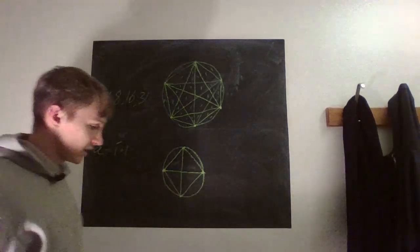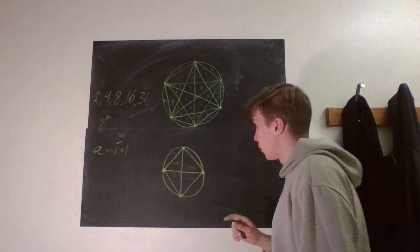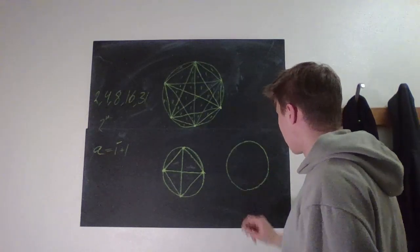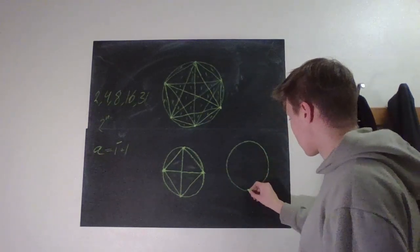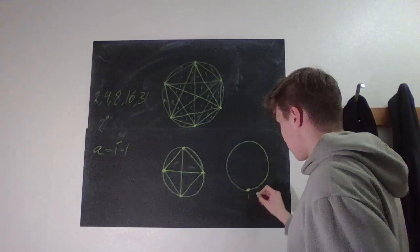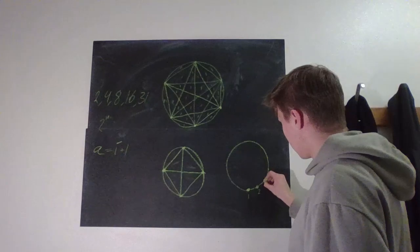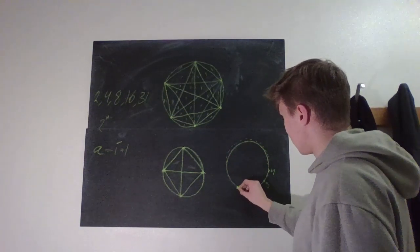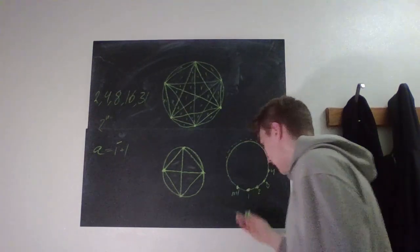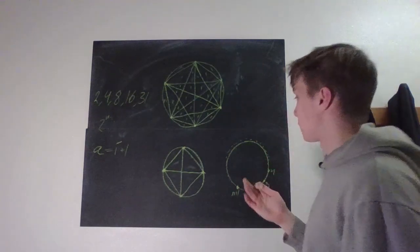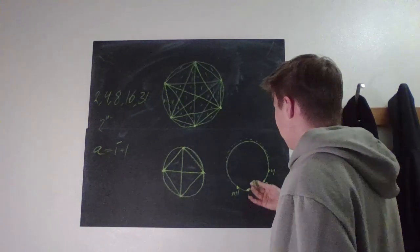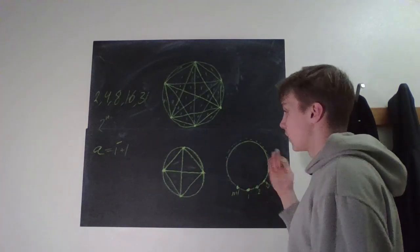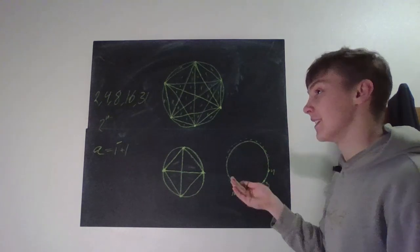Let's make a function for the number of new intersections when adding a point to a circle with n existing points. It's easier to visualize with an arbitrary number of points: first, second, third, fourth, and so on, up to the new (n+1)th point. We choose n+1 because we want a relationship in terms of n.